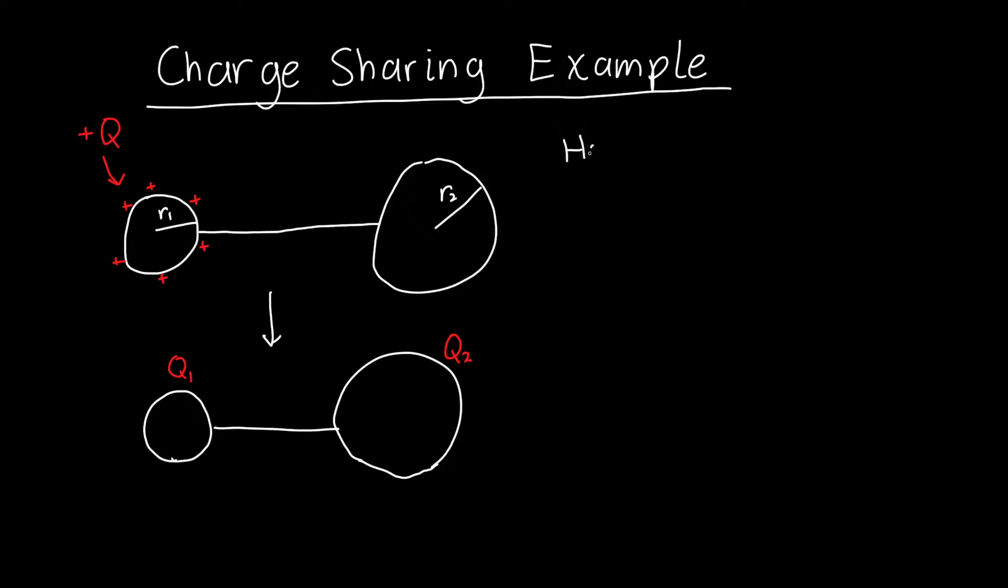How do we solve this problem? There's some potential ideas. Maybe the charge is just split evenly between the spheres. Maybe the surface charge density is constant between the spheres. Or maybe there's something else going on here. And it will turn out that yes, there is something else going on here.